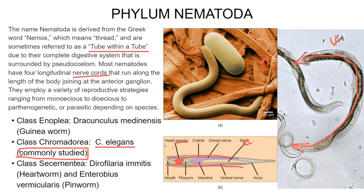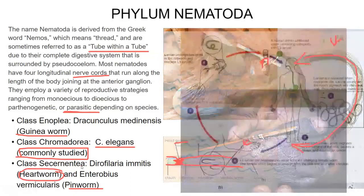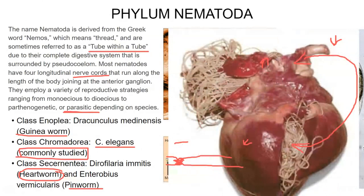Many, many species of nematodes are parasitic and some can cause pretty bad disease. Some, like the pinworm, which is a nematode, cause itchiness and are usually found in children. Others, like the guinea worm, can cause more serious problems. You may be familiar with heartworm disease — this pet, probably a dog, died from heart disease due to infection with this nematode called heartworms, which is transferred by the bite of a mosquito. Always use your pet preventative to prevent this from happening.